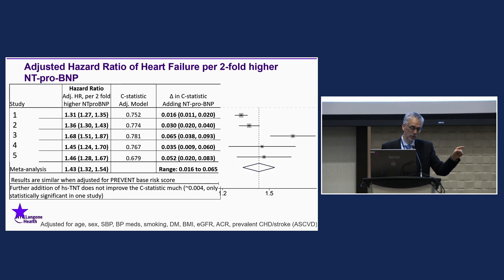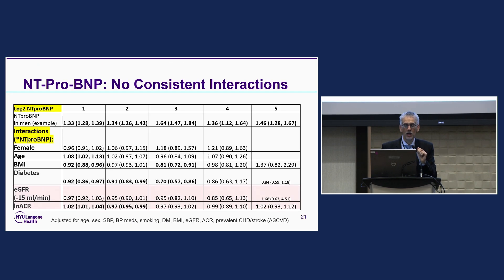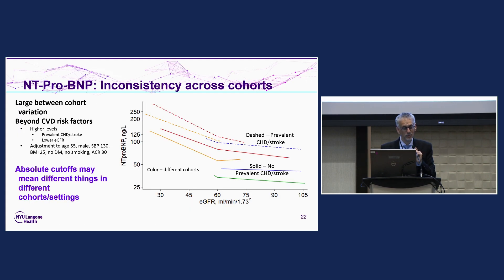Troponin on top of NT-proBNP only added a delta-C of 0.004, so maybe we don't need both. There were no consistent interactions by age, sex, or BMI — a little bit weaker in diabetes, and pretty much the same in low GFR versus high GFR and with albuminuria. This is despite the fact that NT-proBNP levels are clearly higher at low GFR, and also higher in those with existing CHD or stroke versus those without. Whether absolute cutoffs will work is something I don't fully know — that's a useful point for conversation.